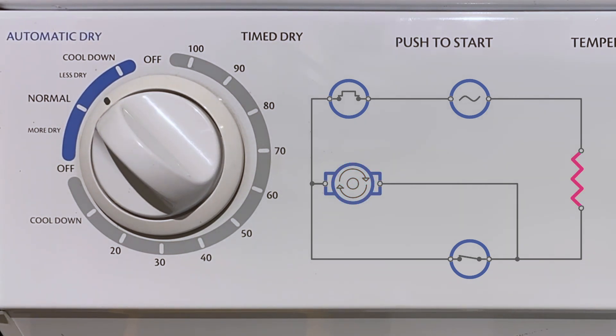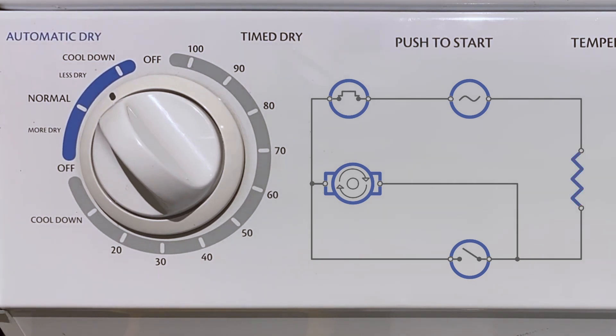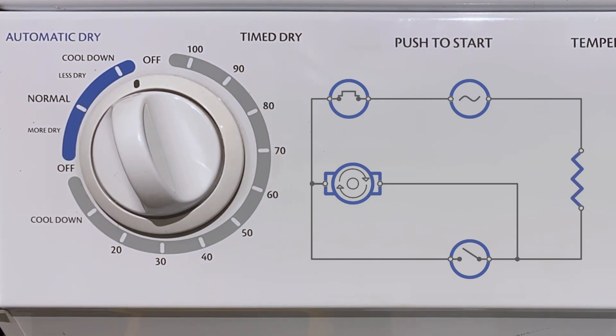This cycle repeats over and over. When the heating element turns off, the knob starts again. When the heating element turns on, the knob stops. Once the knob reaches cool down, the heater stays off so the knob continuously advances until the buzzer sounds and the master switch opens ending the cycle.